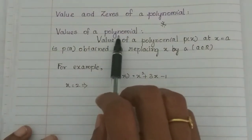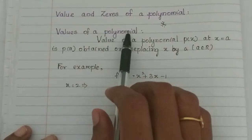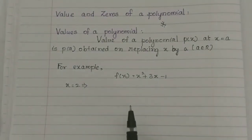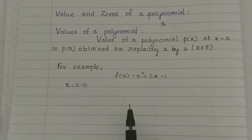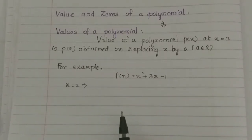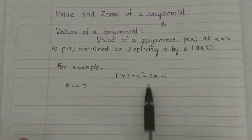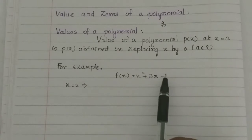So, what do we know about polynomial? A single term is monomial. Two terms are binomial and three terms are trinomial. More than three terms are polynomial. So, a polynomial is a combination of terms.